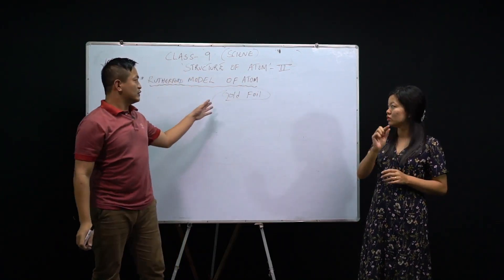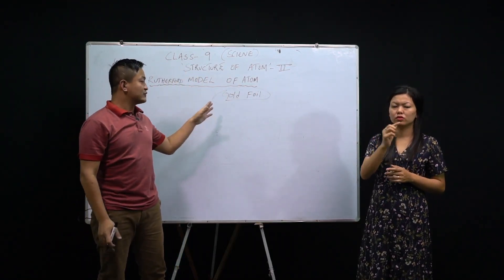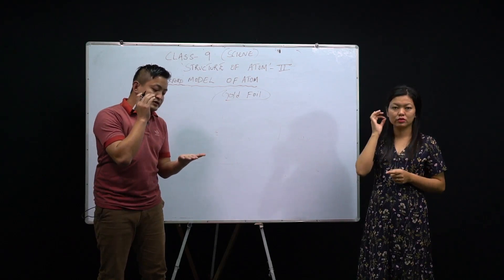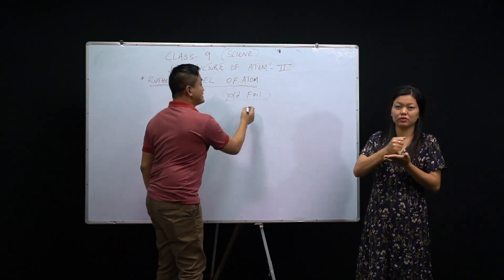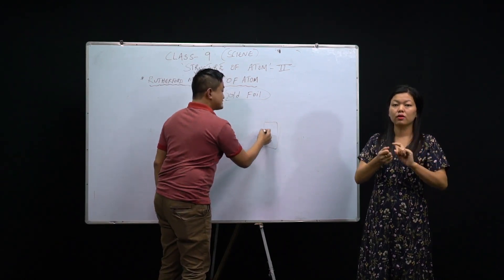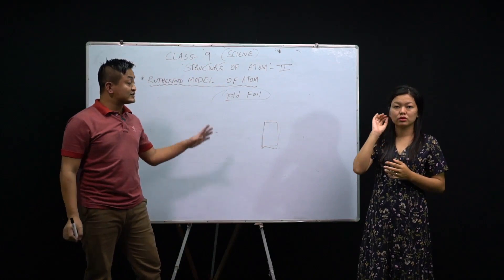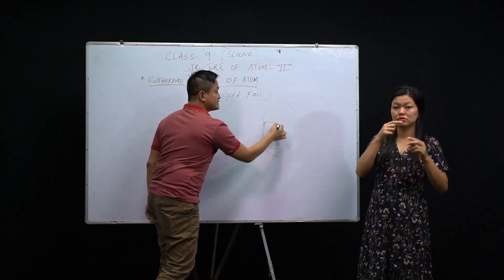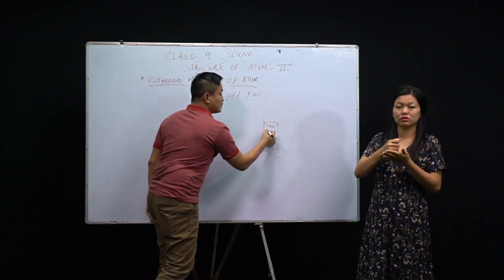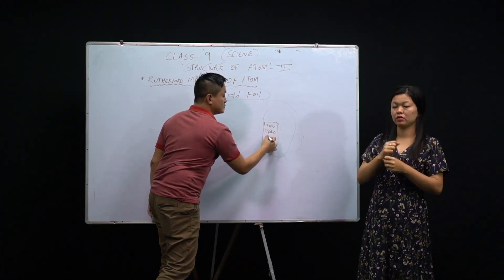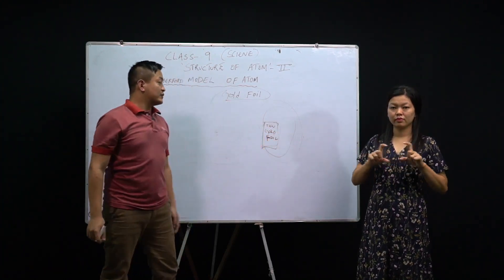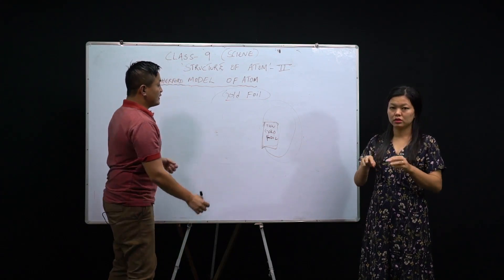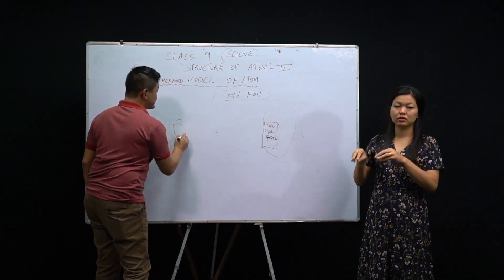Why did he use a gold foil? Gold is expensive, but gold can be beaten into very thin sheets. So he took a thin gold foil and placed it in the experimental setup. There is a screen on one side, and this is the thin gold foil.